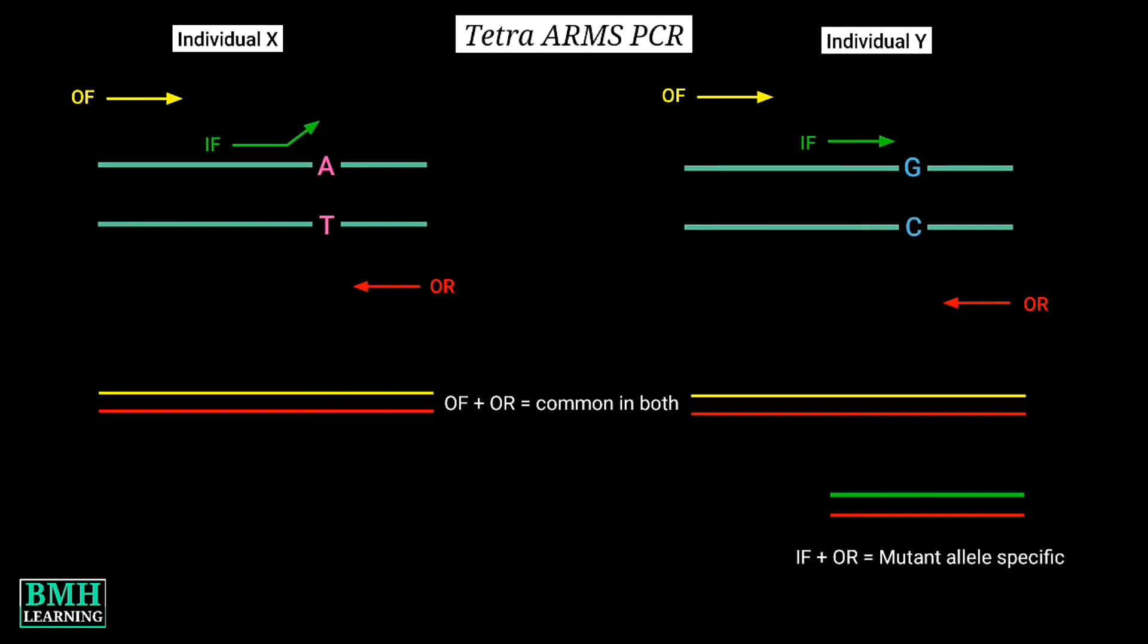Similarly, internal reverse primer specific for the Individual X wild type allele anneals and produces the amplicon in combination with outer forward primer. But this will not generate any PCR product in case of Individual Y.